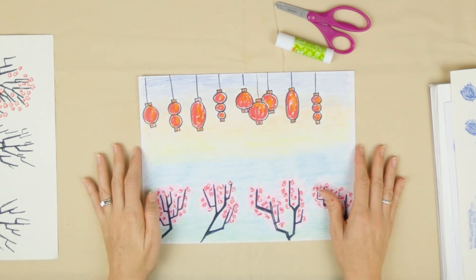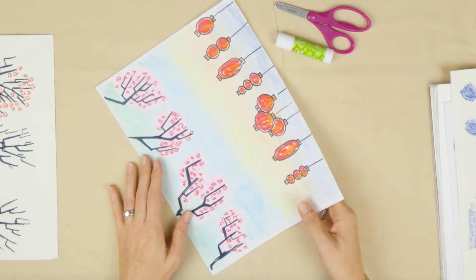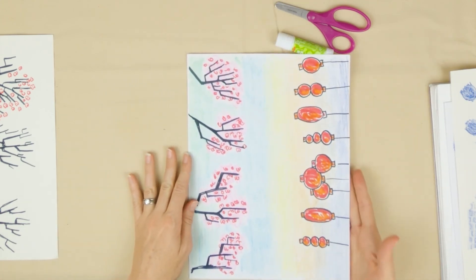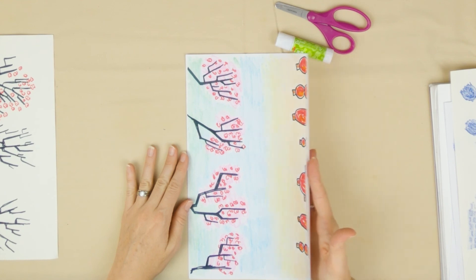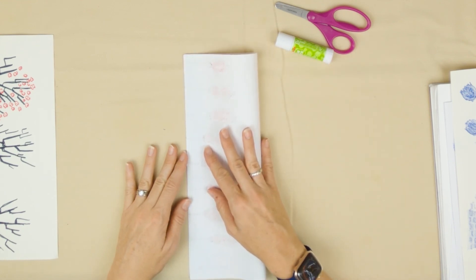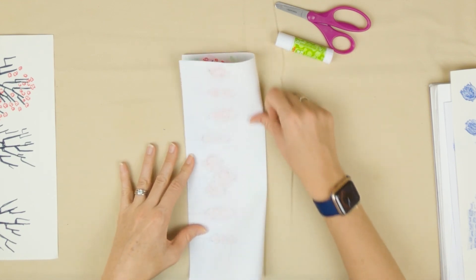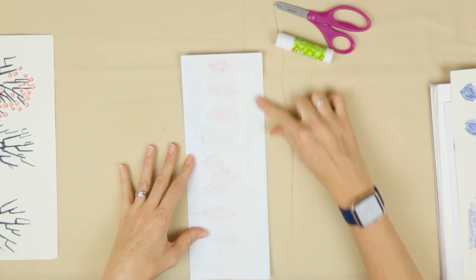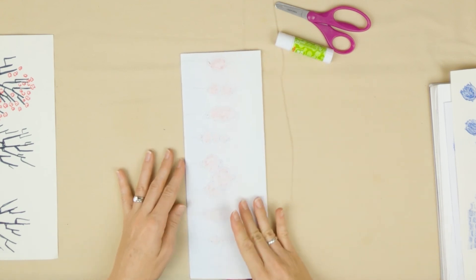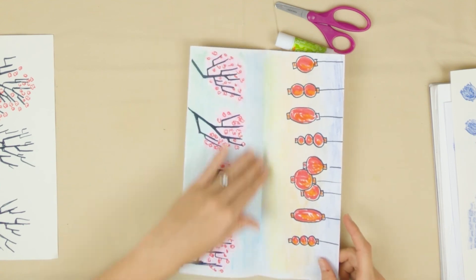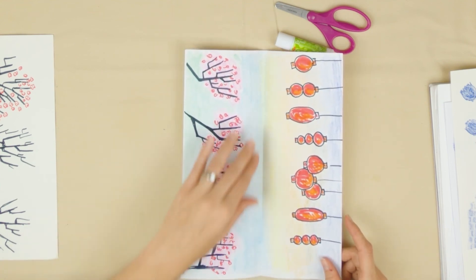First thing you're going to do is take your paper. I think it's easiest to turn it vertically, so it's up and down like this. We're going to fold it in half lengthwise, so it should be the long way of your paper that's being folded. It should be a vertical fold all the way down the middle here.